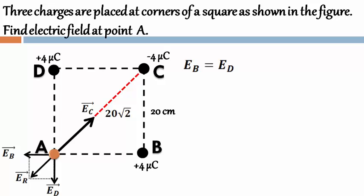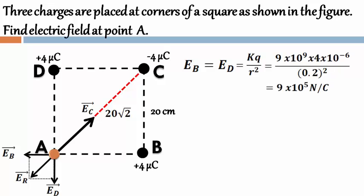Now, E_B will be equals to E_D in terms of magnitude that will be equals to KQ by R square. Substituting the values and simplifying we get its value is 9×10^5 Newton per coulomb.